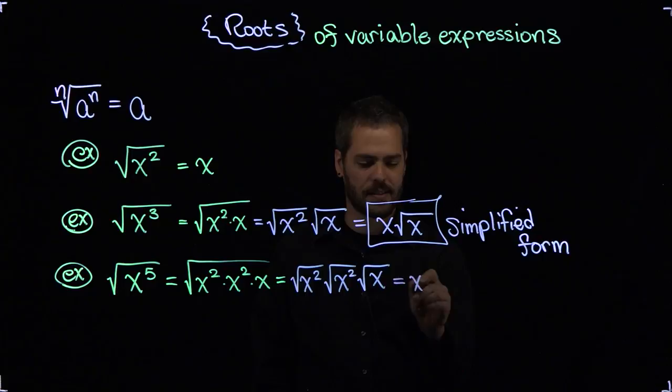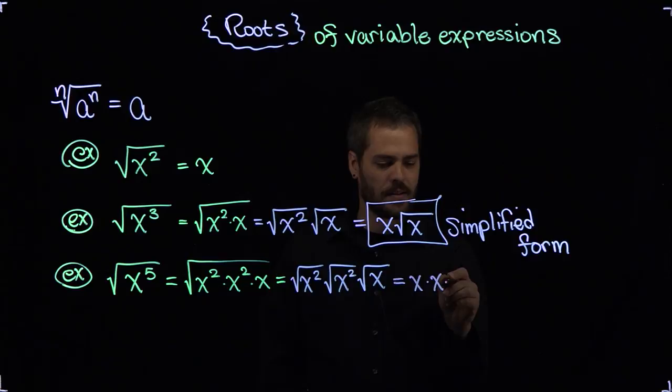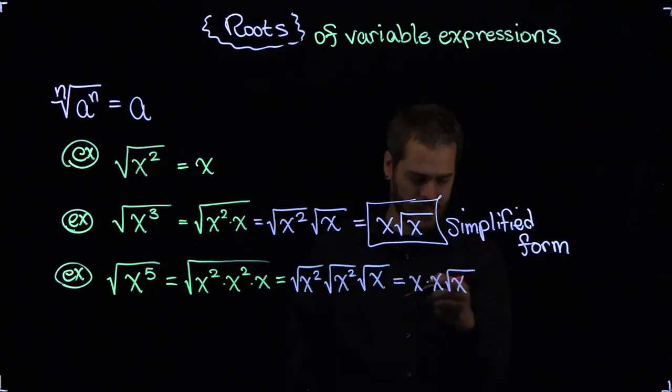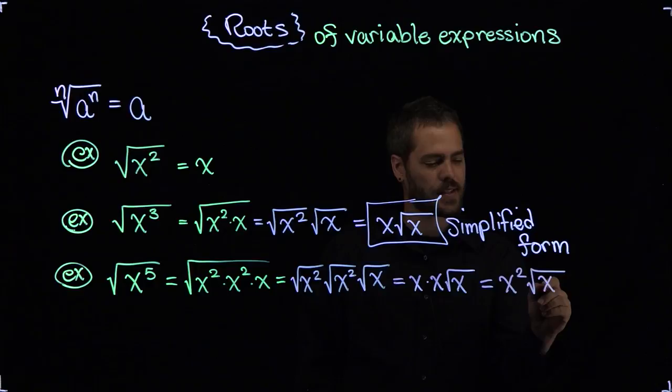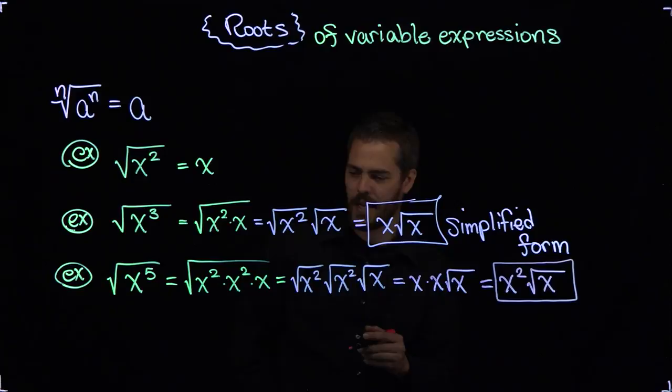This becomes x from this first one times another x from the second one times the square root of x. Now I can take this one more step to say x times x is x squared. And I have the square root of x over there. And again, this is what we're calling the simplified form.